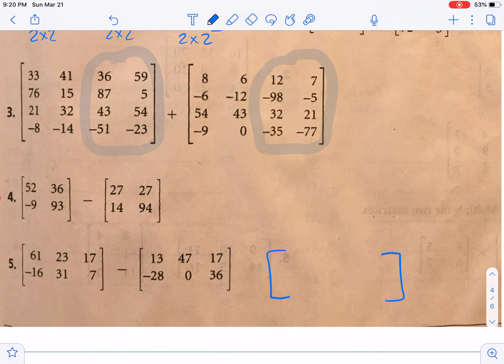So you do it the same way, only now you're subtracting. So you have sixty-one minus thirteen, which would be forty-eight. Then we have twenty-three minus forty-seven, which would be twenty-four. Negative twenty-four. Then seventeen minus seventeen, that's an easy one, that's zero.